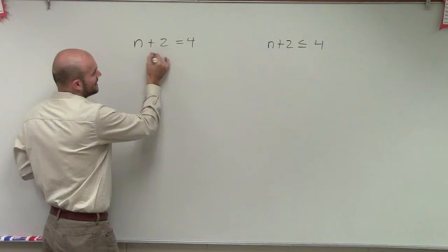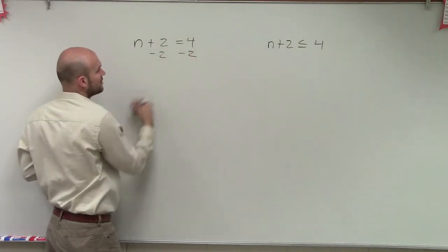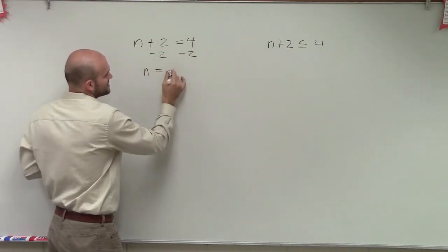So since I'm adding a 2 to my n, I'm now going to subtract a 2 on both sides. And then I have n would equal positive 2.